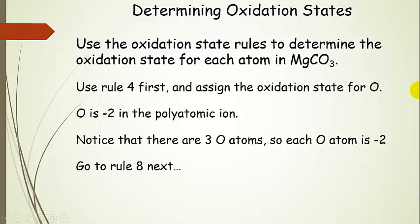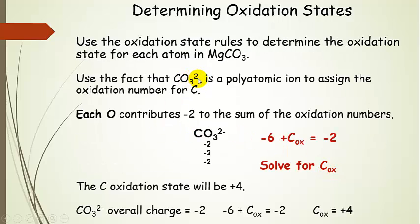Here's a harder example: magnesium carbonate, MgCO₃. I'll use rule 4 first. I'll split this into the Mg²⁺ cation and the carbonate polyatomic ion. Oxygen is not in a peroxide here, so it's minus 2. There are three of them, so all three oxygens have a minus 2 oxidation state.